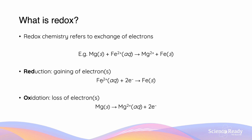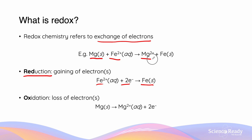So first off let's consider what is redox. Redox chemistry refers to the exchange of electrons. We can see in the equation below that the iron 2+ ion has gained two electrons in order to form the iron metal — we call this process reduction. The magnesium has gone from a neutral to a 2+ state, meaning that it has lost electrons — we call this process oxidation.